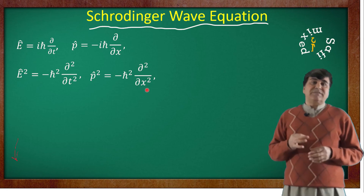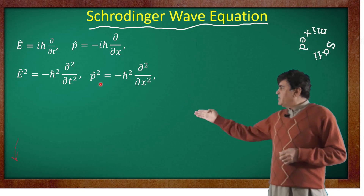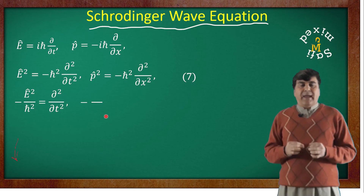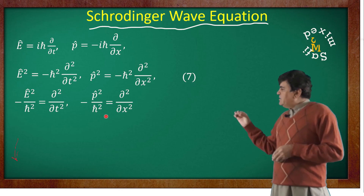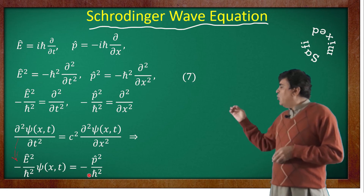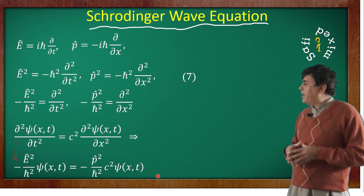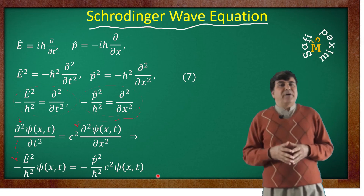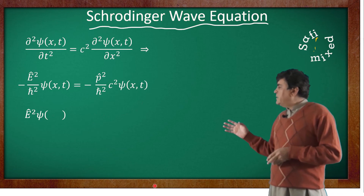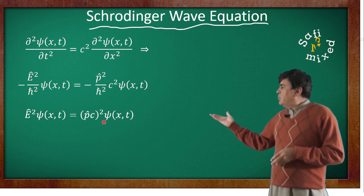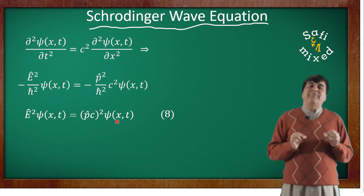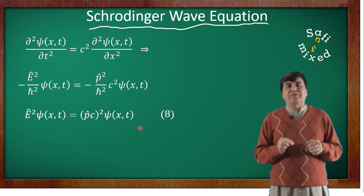Rearranging, these operator equations can be expressed in a useful form. Substituting the squared operators back into equation A gives: minus E-hat squared over h-bar squared times psi equals minus (p-hat c) squared over h-bar squared times psi. The h-bar squared cancels from both sides, and the equation takes the final form: E-hat squared times psi equals (p-hat c) squared times psi. This equation is the quantum version of the classical electromagnetic wave equation for massless particles, i.e., for photons.